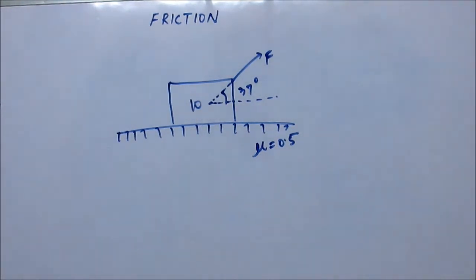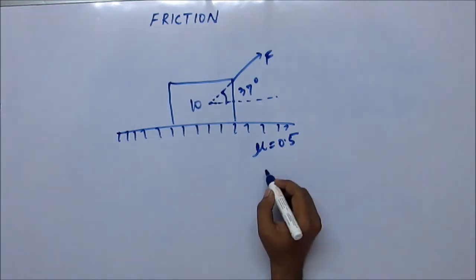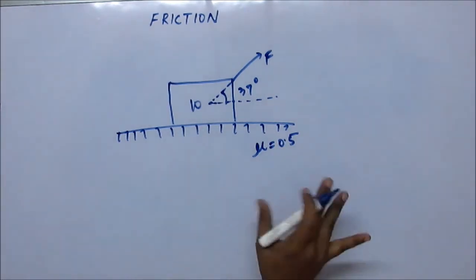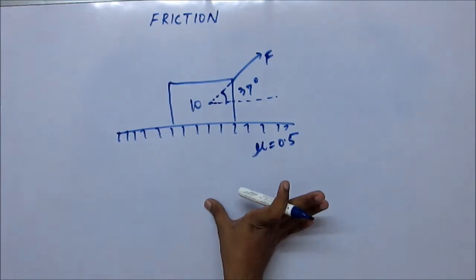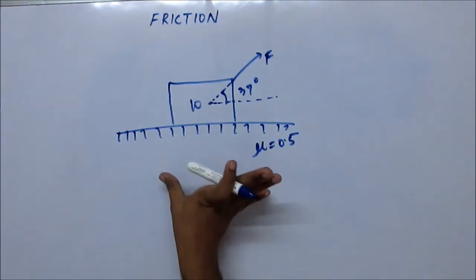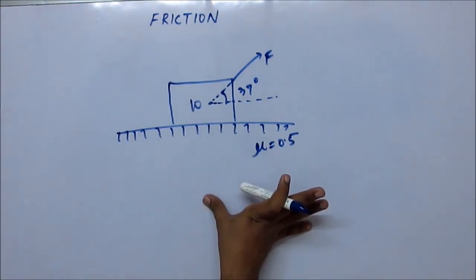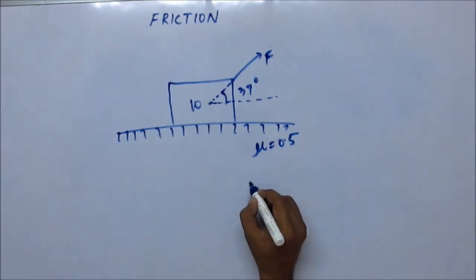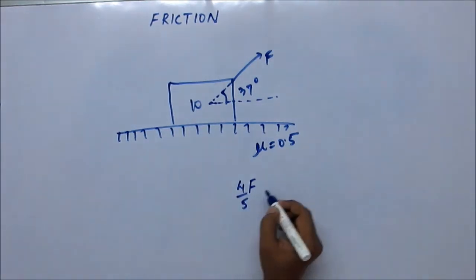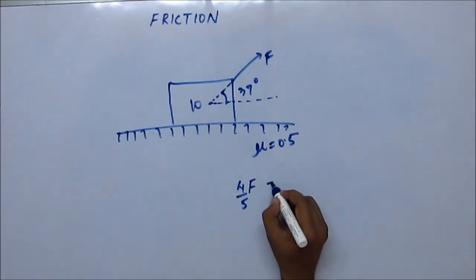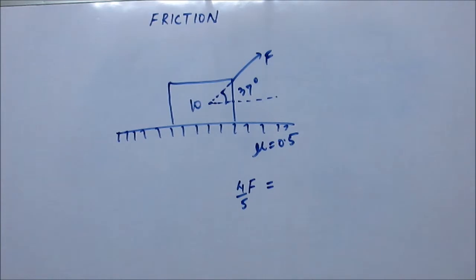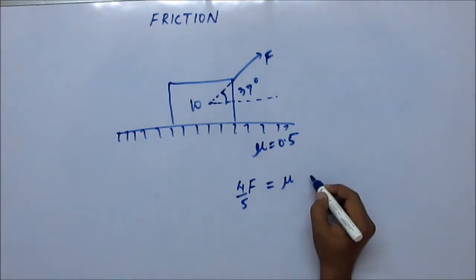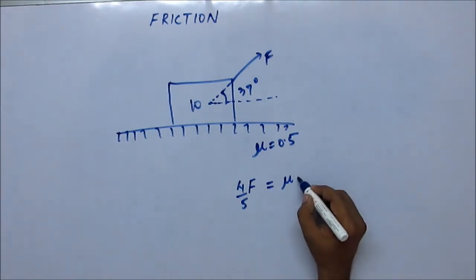I hope you have got the answer. Let's discuss case by case. First, let's consider at what minimum force the block will start to slip on the ground. For that, the horizontal component is f cos 37 degrees, that is 4/5 f. This should be equal to the only opposing force in horizontal direction, which is friction: mu times normal reaction. Normal reaction will be equal to mg.